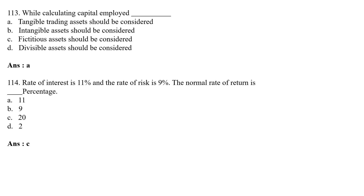Rate of interest is 11% and rate of risk is 9% — what is the normal rate of return? To find the normal rate of return, you simply add rate of interest plus rate of risk: 11% + 9% = 20%. So Option C — 20% — is the normal rate of return.